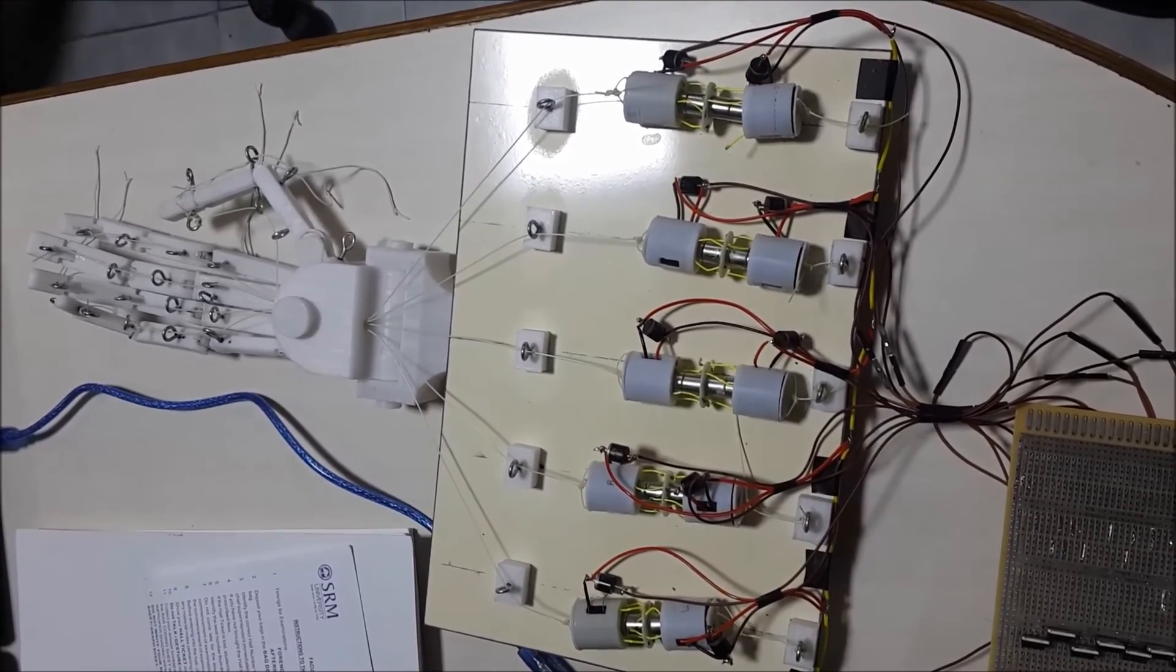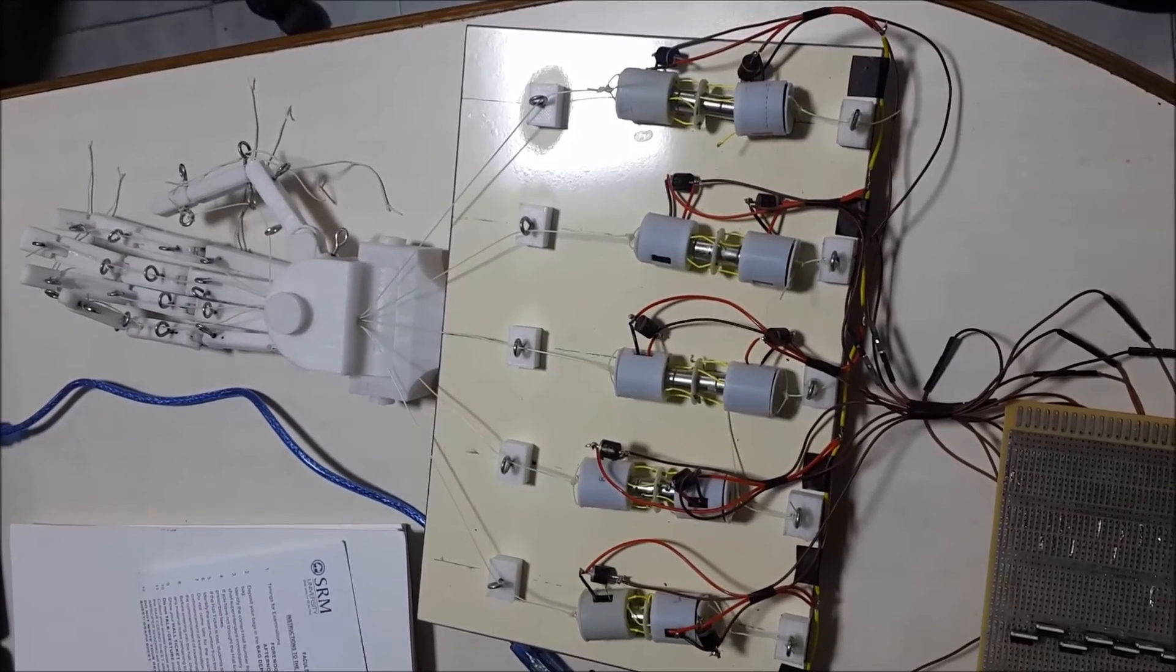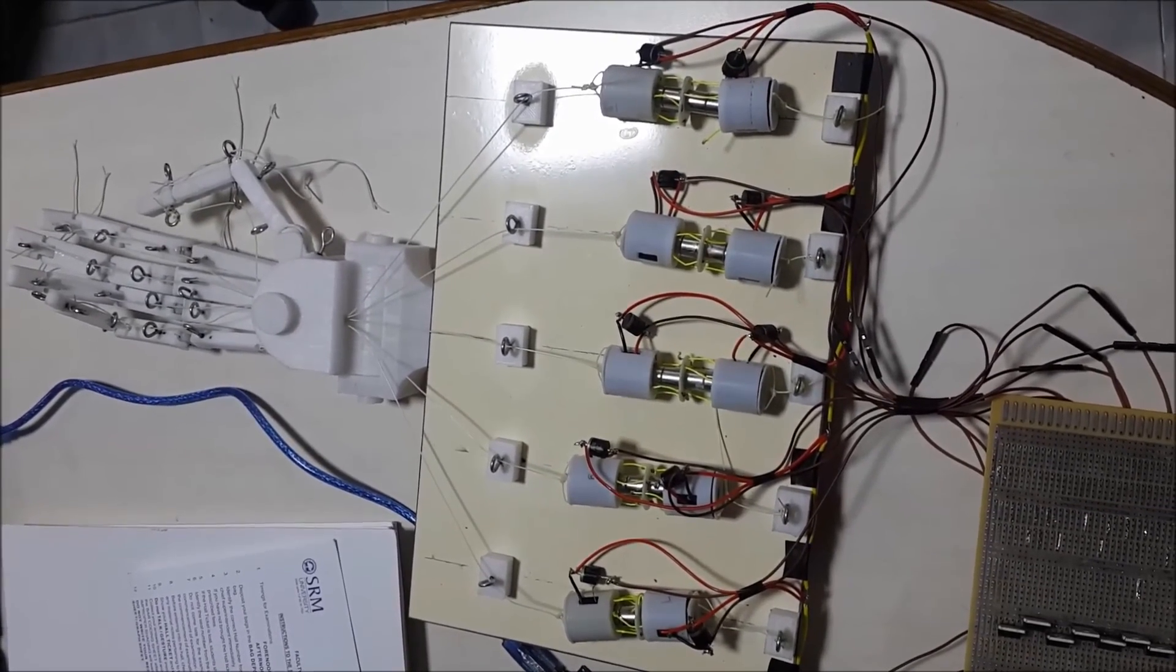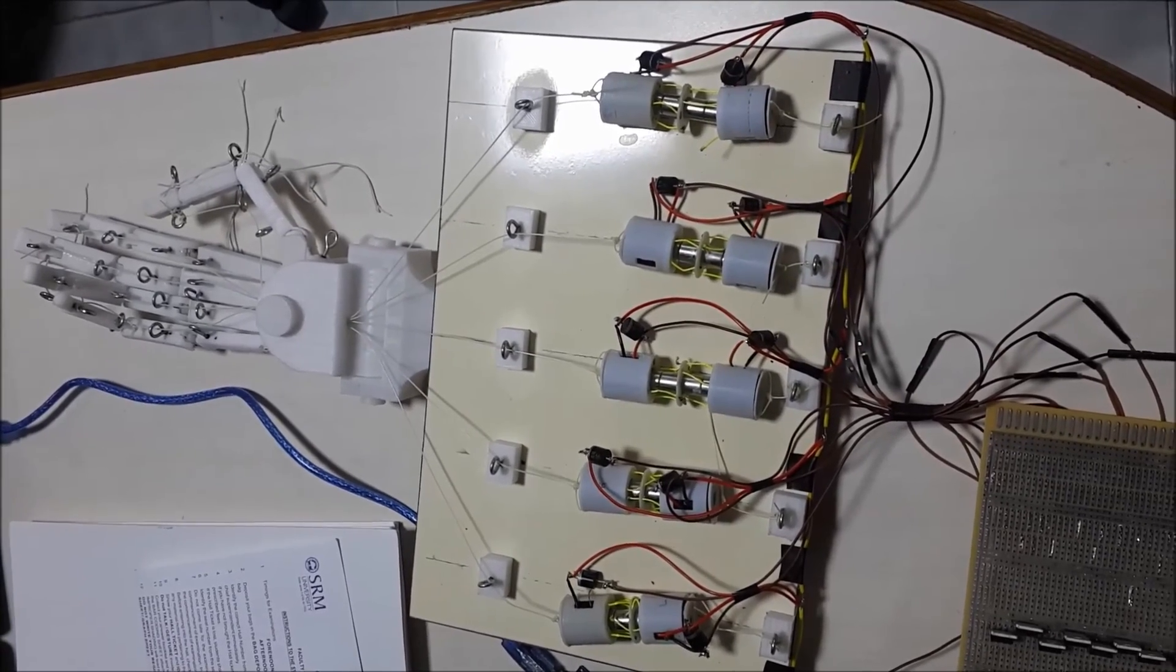12 volts, 15 amps power source is used. MOSFETs are used to switch on and off the sarcomeres. Arduino Uno is used to control the sequence of actuation.